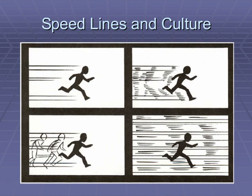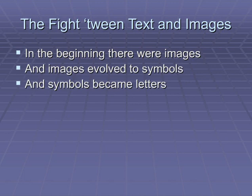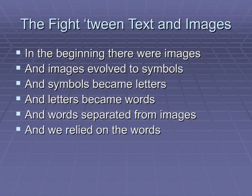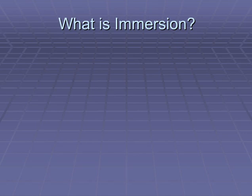Now I want to talk about the fight between text and images. In the beginning, there were images, and images evolved into symbols, and symbols became letters, and letters became words. The words separated themselves from the images, and the text became something unique unto itself — we saw less and less images and relied on the words. But now our reliance is shifting again, going back towards the images. As we come to rely more and more on non-text things, we have to ask ourselves: what is immersion?